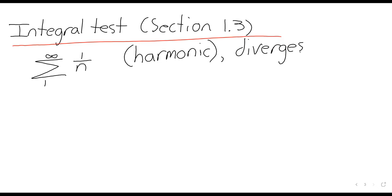The question we're now going to ask is: how do I know that it diverges? The only test we know so far — working with series that are not geometric, and this is not geometric — the only test we know that would tell us a series diverges is the nth term test. We could take the limit as n goes to infinity, and if this limit were anything but zero, we'd get divergence. Well, the nth term test is useless here. The limit as n goes to infinity is equal to zero.